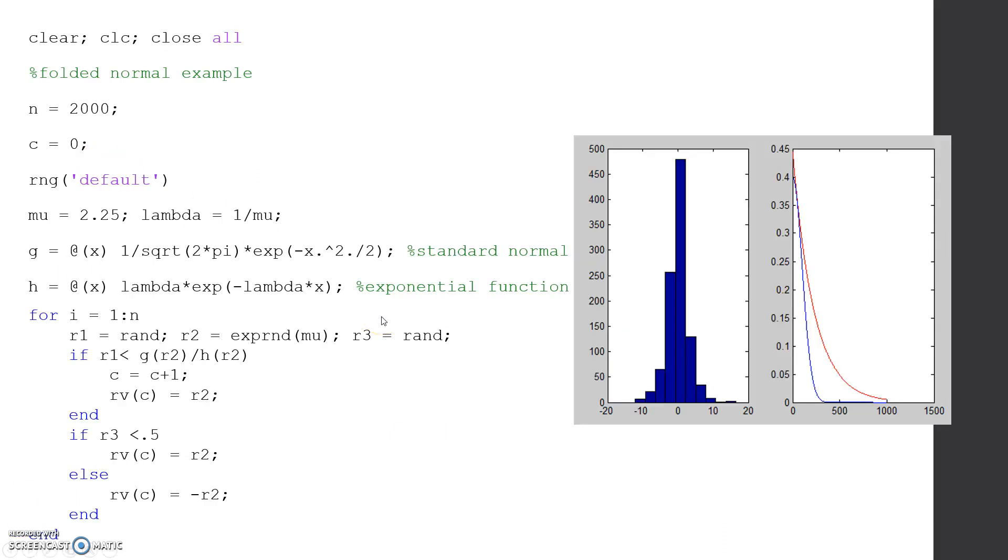Here is an example that we did in MATLAB of using the envelope method. We're using the folded normal. We have 2,000 iterations, a mu and a lambda. Then our G is our standard normal density function, or distribution function, and H is our exponential function. Here is where we're generating all of the random variables and then using this proportion to decide if we keep them or not.